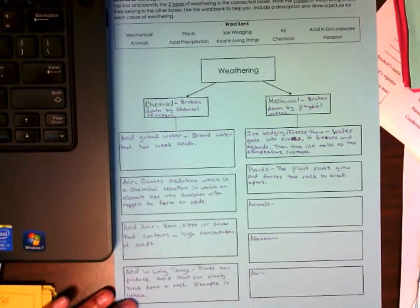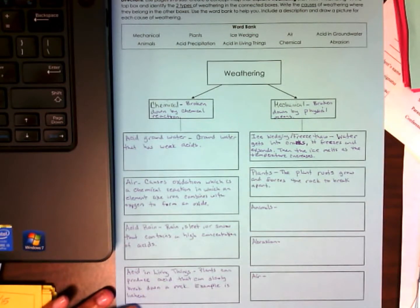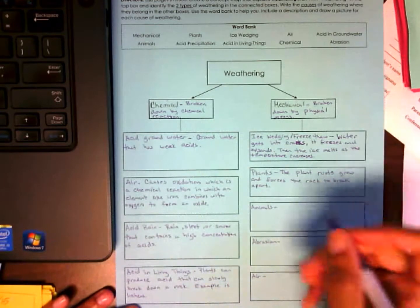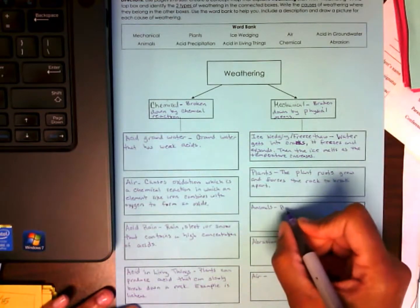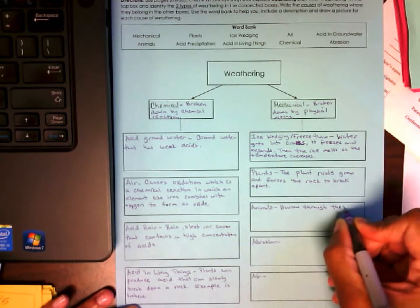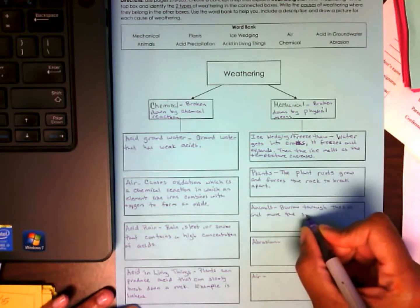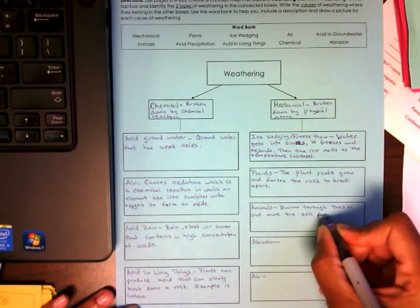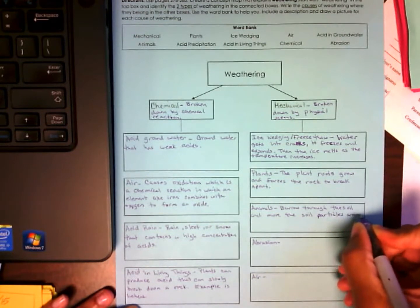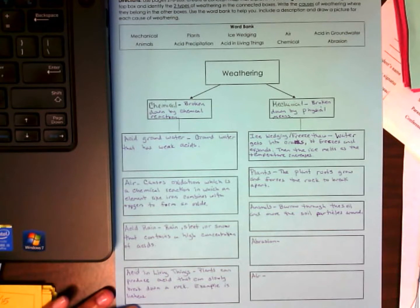Okay, what about animals? How do animals affect mechanical or physical weathering? Aaliyah. They burrow through the soil and move the soil particles around. They burrow through the soil and what, sweetie? Move the soil particles around. Okay, so they burrow through the soil and move the soil particles around. And what happens is that it loosens the rocks to be exposed to weathering.